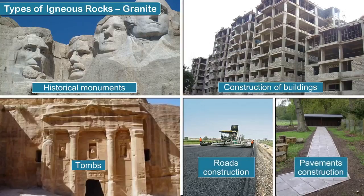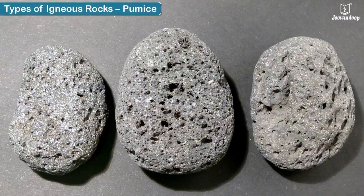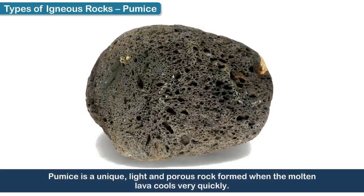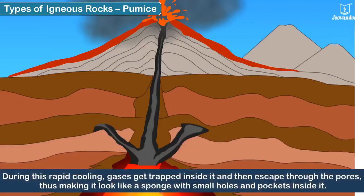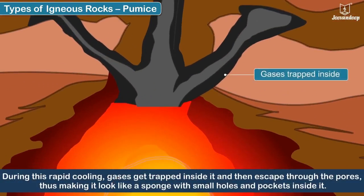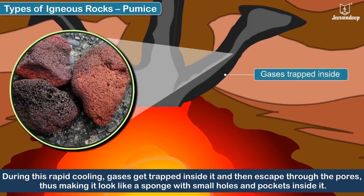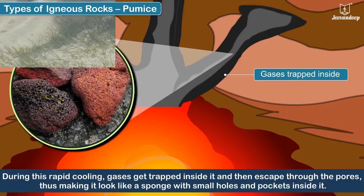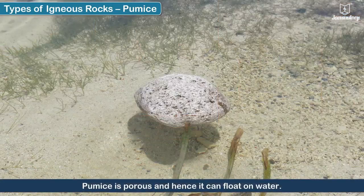Granite is therefore seen in historical monuments and tombs, and is also used in the construction of buildings, roads, and pavements. Pumice is a unique, light, and porous rock formed when molten lava cools very quickly. During this rapid cooling, gases get trapped inside it and then escape through the pores, making it look like a sponge with small holes and pockets inside it.